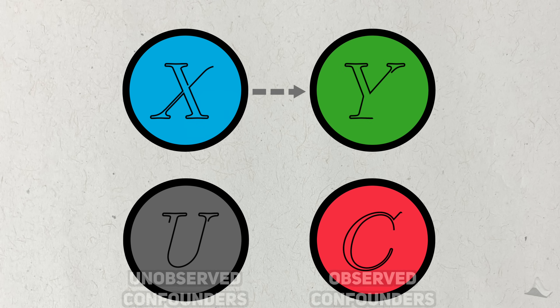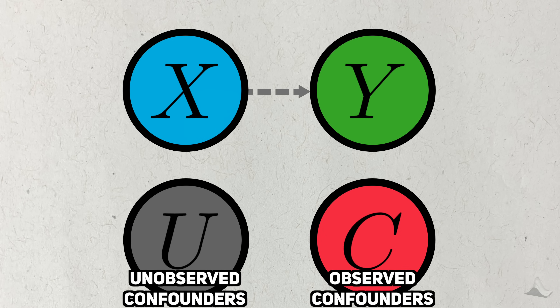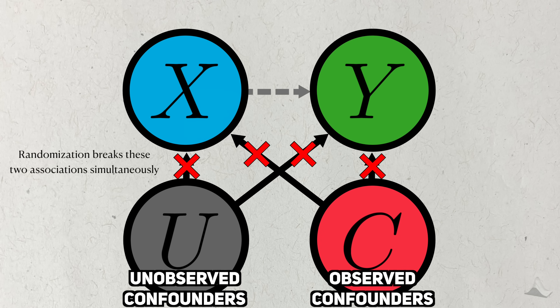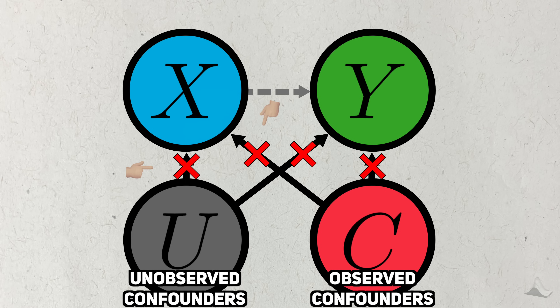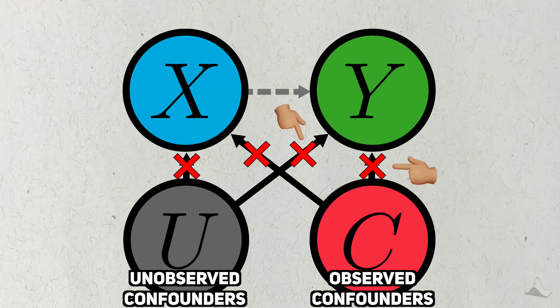We know that confounders get in the way of isolating causal relationships. So somehow, randomization needs to break these two associations simultaneously — the cause-confounder relationship and the outcome-confounder relationship.